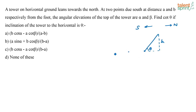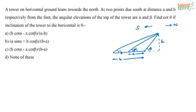Consider two points due south of the tower. These two points are at distances a and b respectively from the foot of the tower. From these two points, the angles of elevation to the top of the tower are given as alpha and beta. We have to find cot theta, where theta is the inclination the tower makes with the ground. This is the actual length of the tower, which I am taking as h.